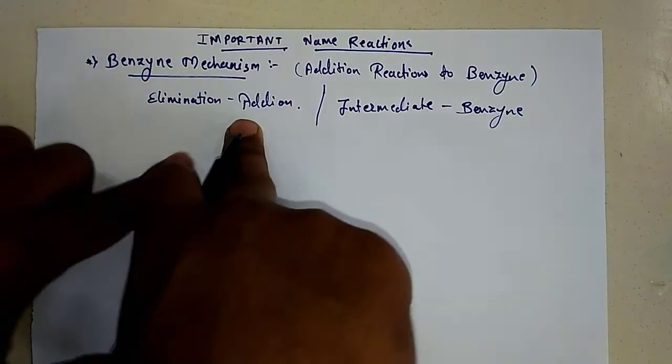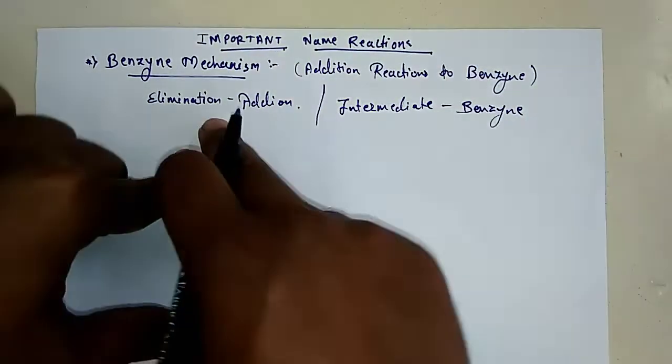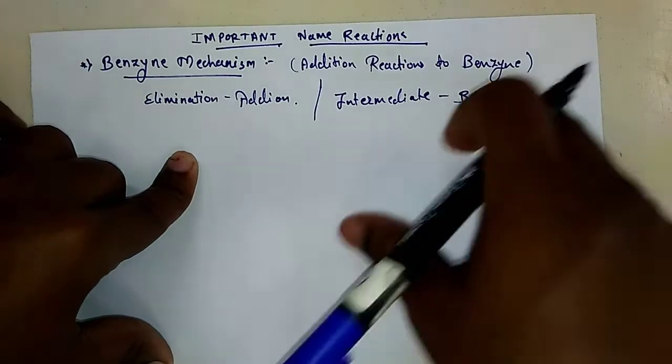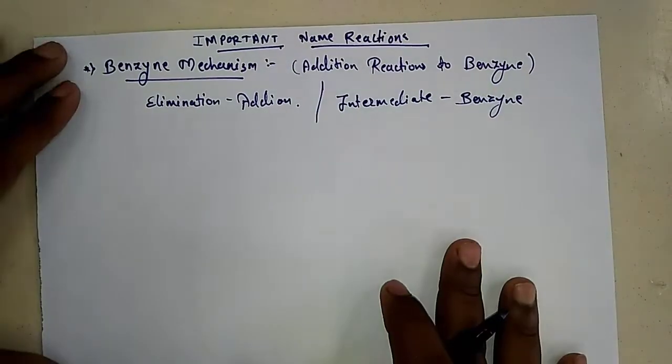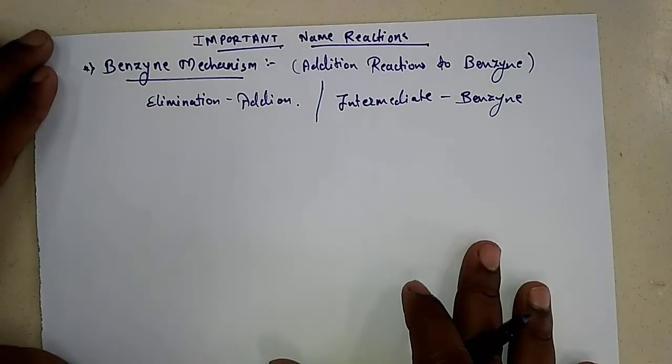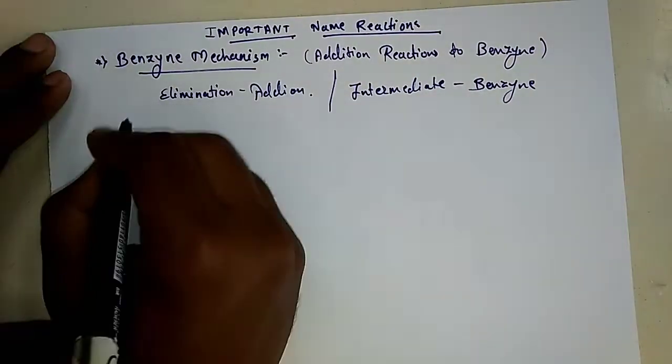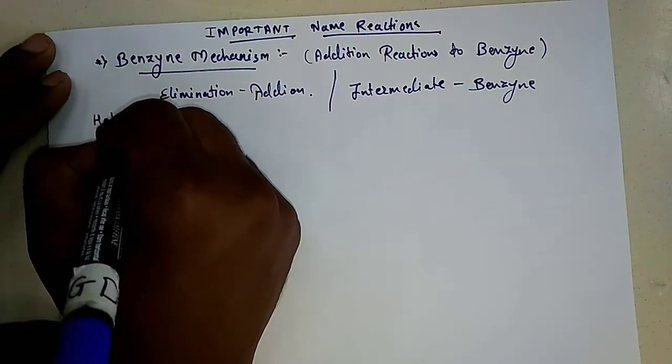Hence this mechanism is called as the benzyne mechanism. That means the reaction goes via formation of a benzyne, and this benzyne undergoes the addition of another nucleophile. It's a kind of SNAr reaction you can say.